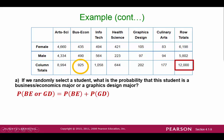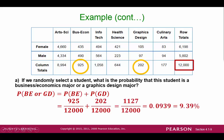We find the probability of each event by looking at the sum totals in the table. The probability of selecting a business econ major is 925 over 12,000. There are 202 graphic design majors, so the numerator for our next probability is 202. After some simple calculations, we get 0.0939. So if we select a person from the school, the probability that this person is a business econ major or a graphic design major is about 9%.